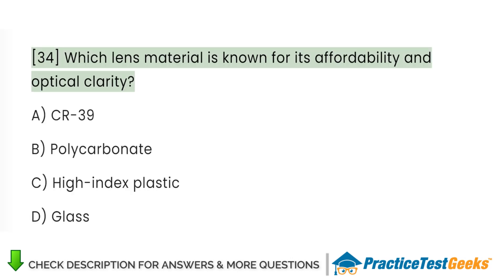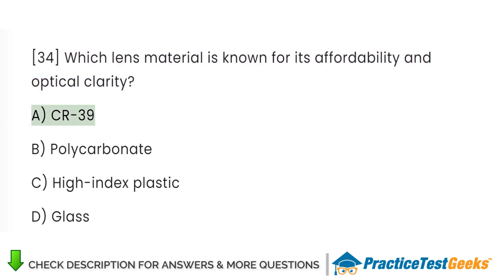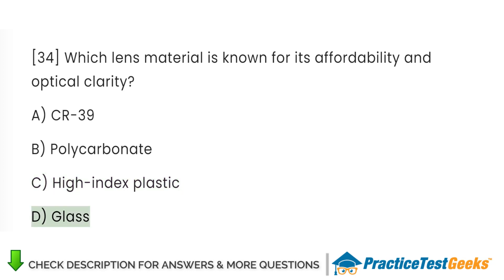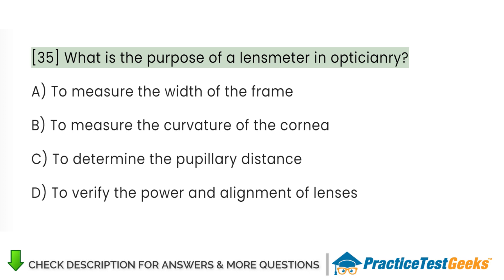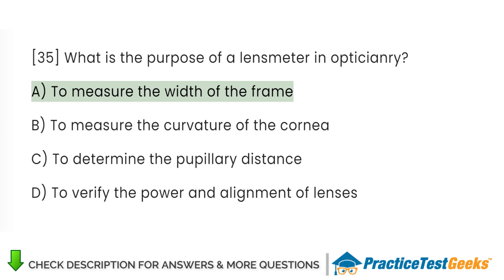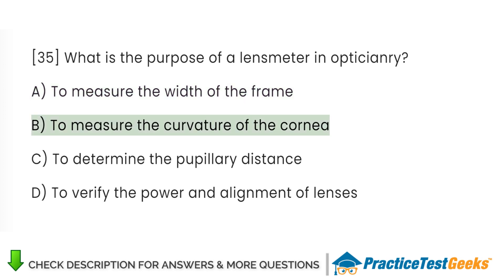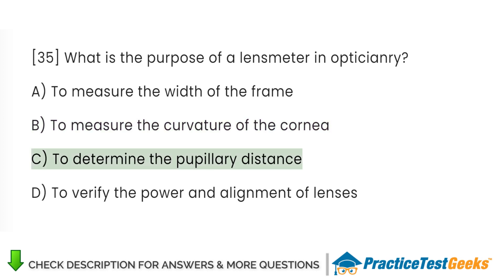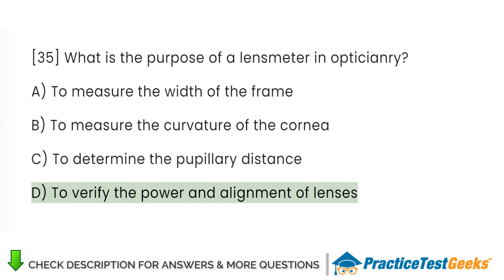Which lens material is known for its affordability and optical clarity? What is the purpose of a lens meter in opticianry? C. To determine the pupillary distance. D. To verify the power and alignment of lenses.